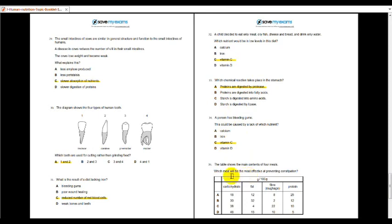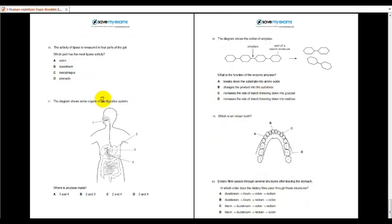35, which meal will be most effective at preventing constipation? Constipation, it has to be rich in fiber. The roughage. So the meal that has the most fiber is C. 22. Next one, 36. The activity of lipase is measured in four parts of gut. Which part has the most lipase activity? It is in the duodenum, colon is in the large intestine. I guess it's way before that. Stomach. No. For lipase digestion. 37, where is amylase made? Amylase is made at number 1 and at number 4. So 1 and 4.